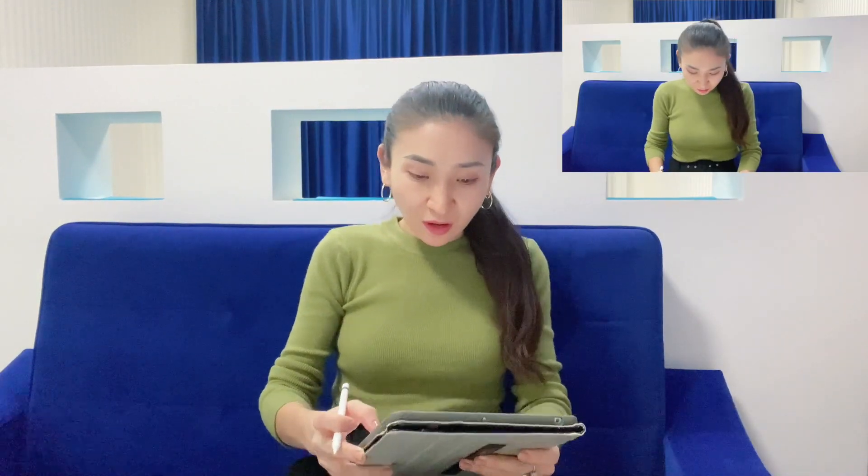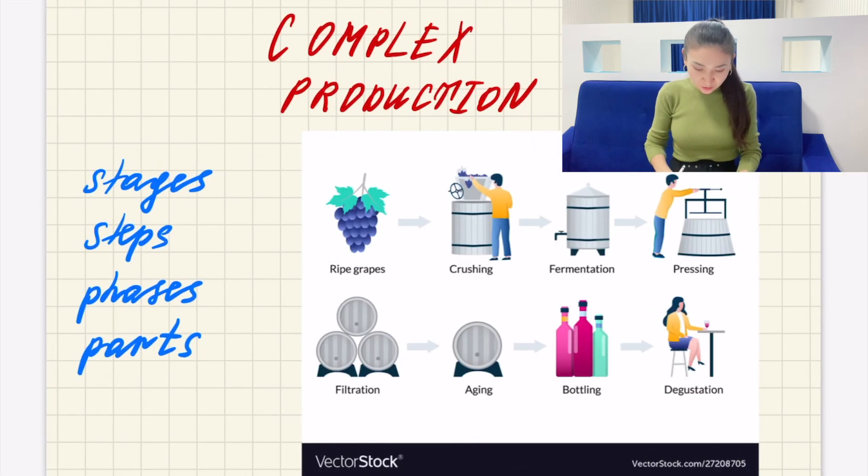So we're going to review a great example and we're going to focus on that one. So writing task 1, complex production and the content of that kind of task and what exactly you have to write in your answer.